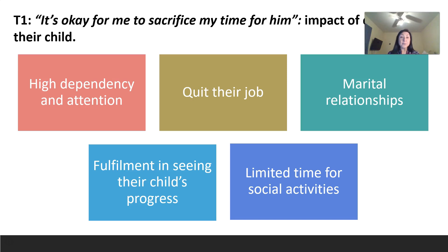The first theme — 'it's okay for me to sacrifice my time for him' — addressed the impact of caring for the child. Respondents reported their children require a lot of help and attention, and some parents had to quit their jobs to provide care. Marital relationships were impacted both positively and negatively — in some cases blame was placed on one spouse, but in others couples became closer and more appreciative. Parents also indicated fulfillment when they saw progress in their child through school attendance, therapies, and their own caregiving efforts.